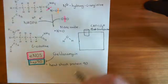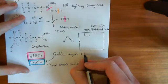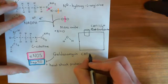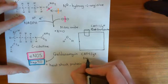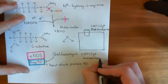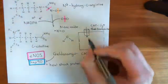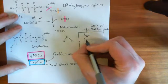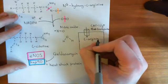Let me write out its name again down here. CAT-1 slash Y-plus transporter. And what this is going to do is it's going to transport L-arginine into the cytoplasm of the cell. So this is what's going to provide the substrate for the nitric oxide synthase enzyme.